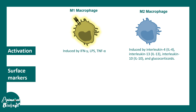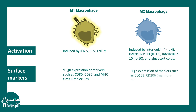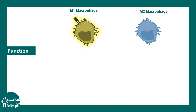When it comes to surface markers, M1 macrophages have very high concentrations of CD80, CD86, and MHC class 2 molecules. Whereas M2 macrophages in contrast have CD163 and CD206, which is basically the mannose receptor.